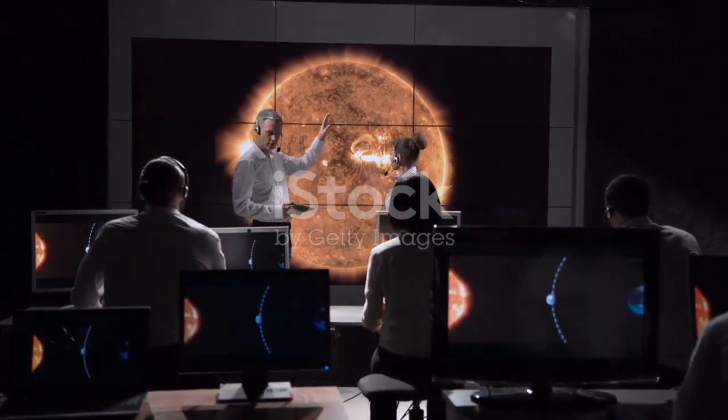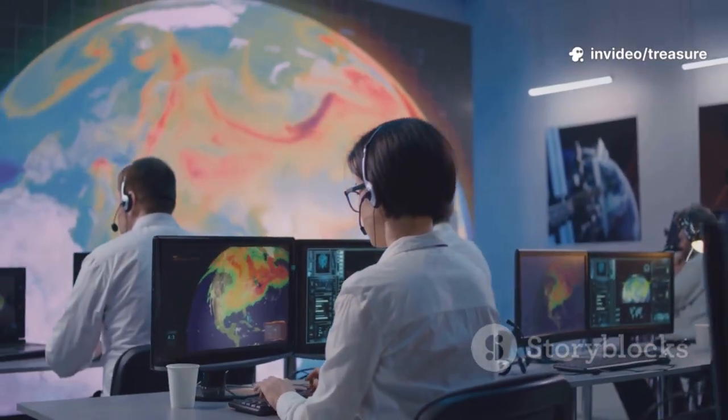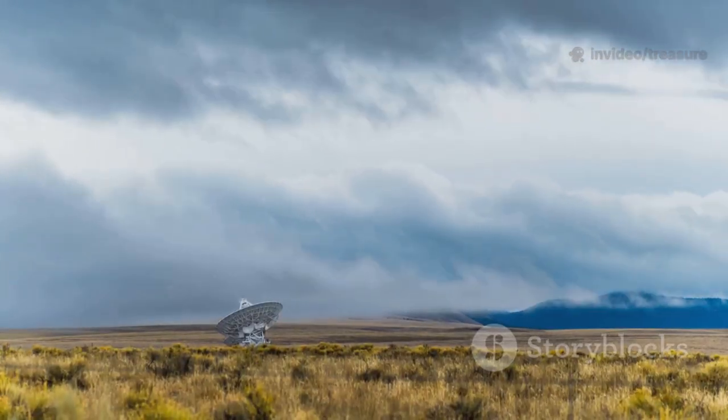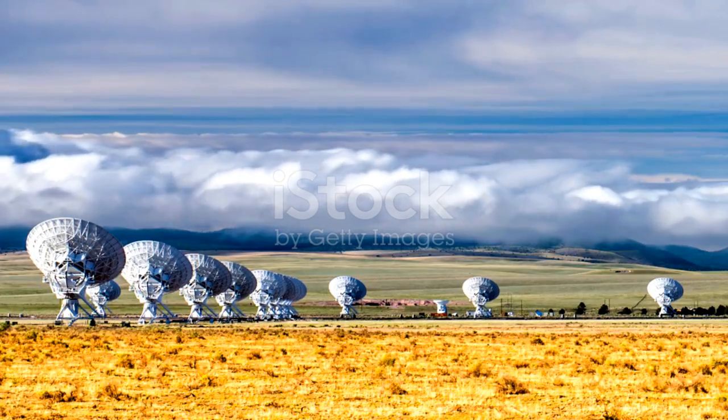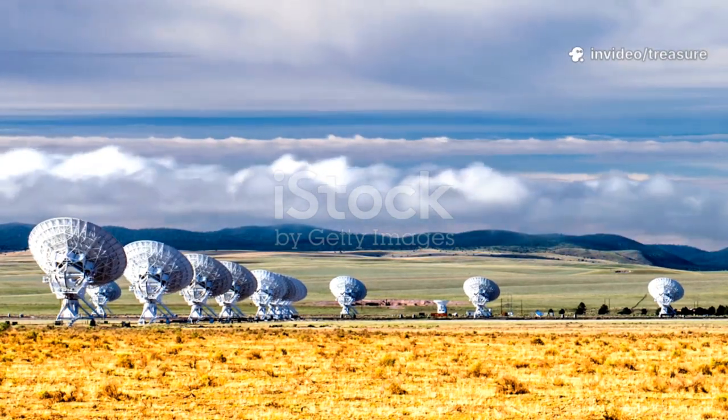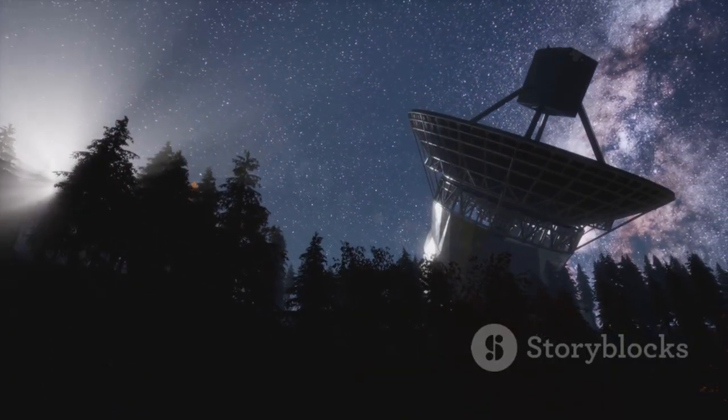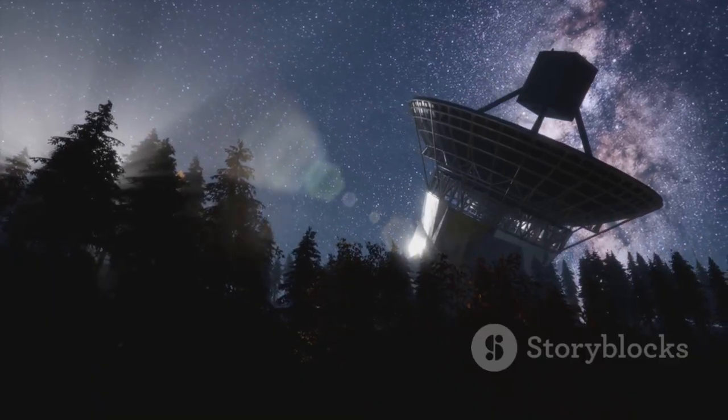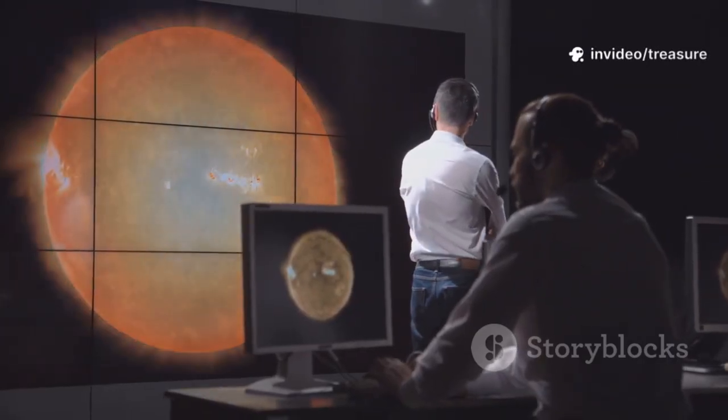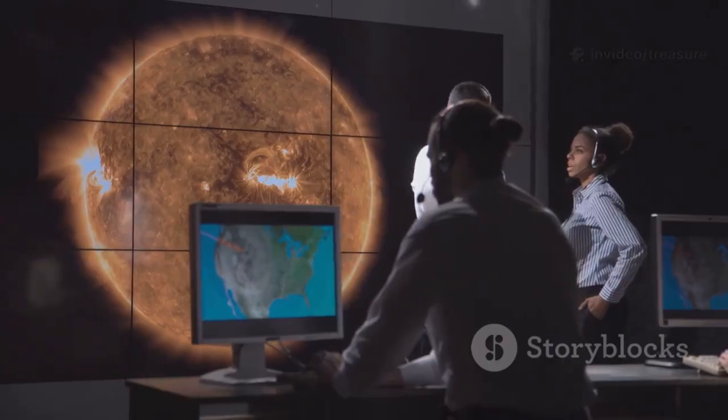Discovering a signal like FRB 20-240304B wasn't an accident. It was the result of incredible technology and a team of dedicated cosmic detectives. The first hero of this story is the Meerkat radio telescope in South Africa. This isn't just one big dish. It's an array of 64 antennas working together as a single, powerful eye on the universe. As part of a program called Meertrap, scientists used this telescope to constantly scan the skies, searching in real time for these elusive, millisecond-long bursts. On that fateful day, Meerkat's sophisticated software caught the signal, instantly recognized it as a potential FRB, and saved all the data for astronomers to analyze.